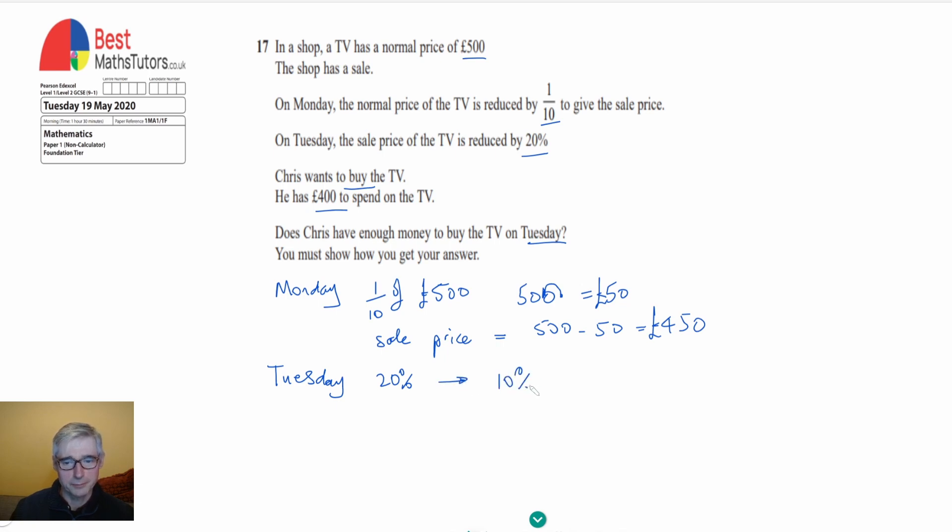But to find that first of all we're going to find out what is 10% of the £450 and again very similar to finding one-tenth all we need to do is move the decimal point back by one place and we can see that that would give me £45.